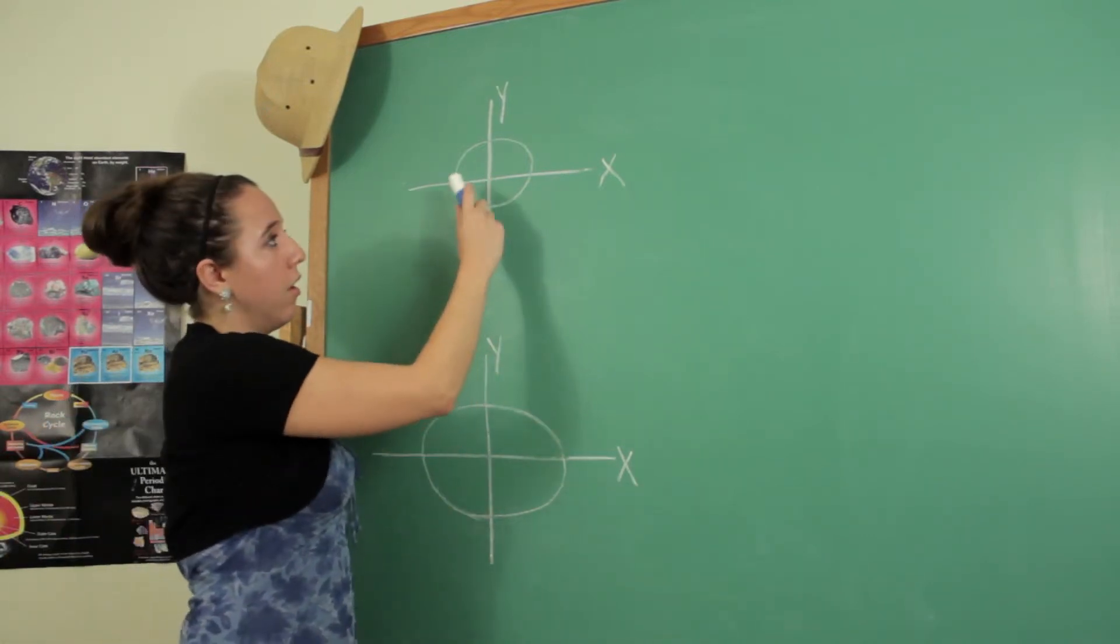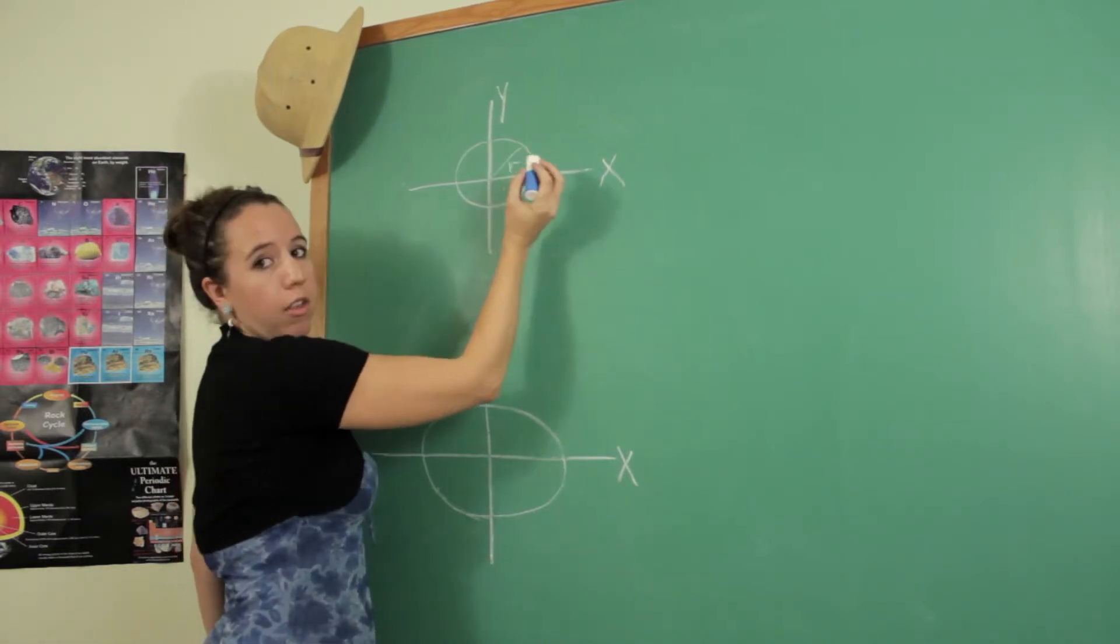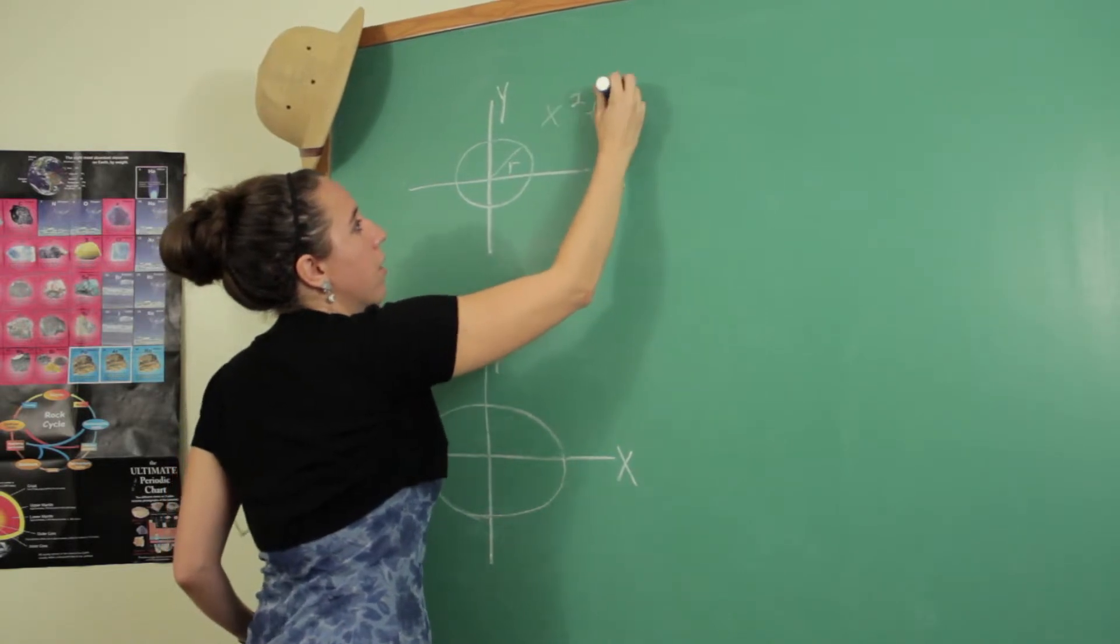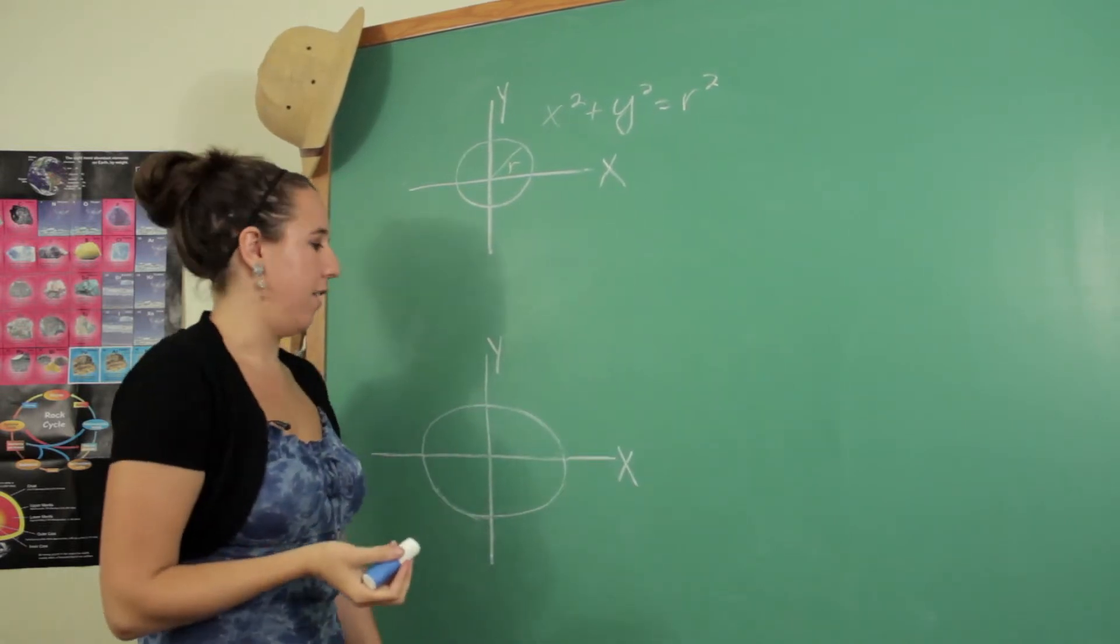So for a circle centered at the origin, you can define it pretty much all in terms of r, the radius. So the equation for the circle is x squared plus y squared equals r squared. Easy peasy.